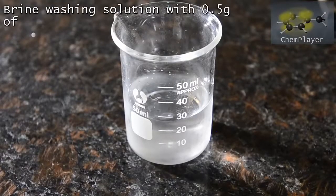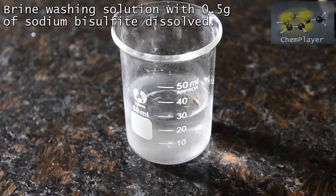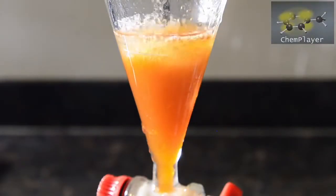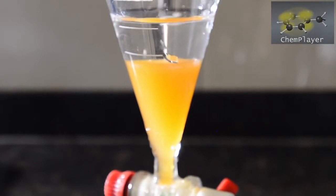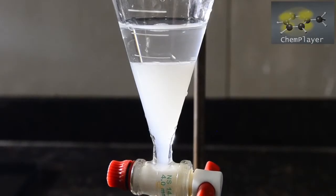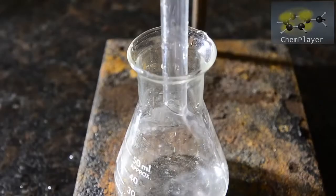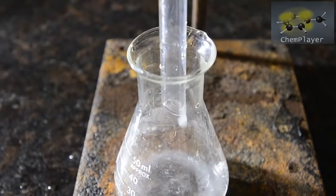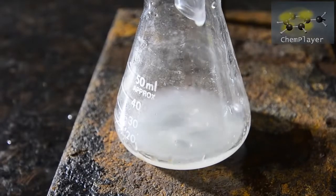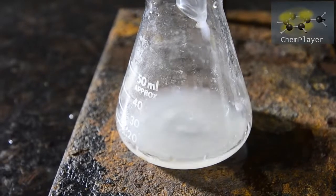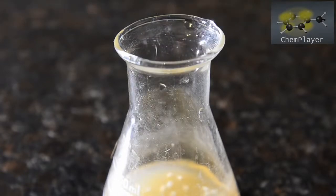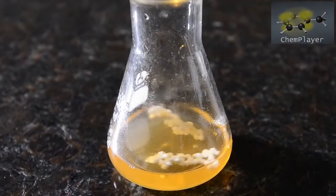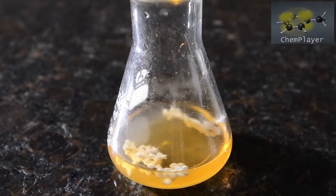This time we used the same washing solution but with a small amount of sodium bisulfite dissolved in. On shaking, this gradually removed a lot of the yellow color from the liquid. We drained off the milky bottom layer, and then we added some anhydrous calcium chloride to dry the liquid. With a bit of swirling, this quickly produced a clear liquid but still with a bit of a yellow tint.